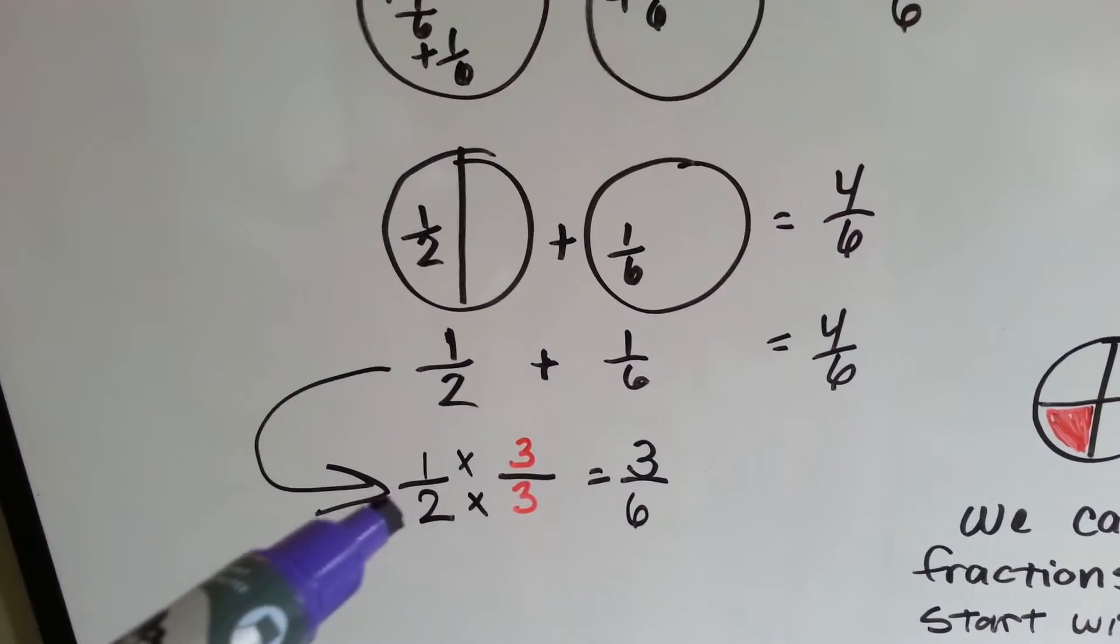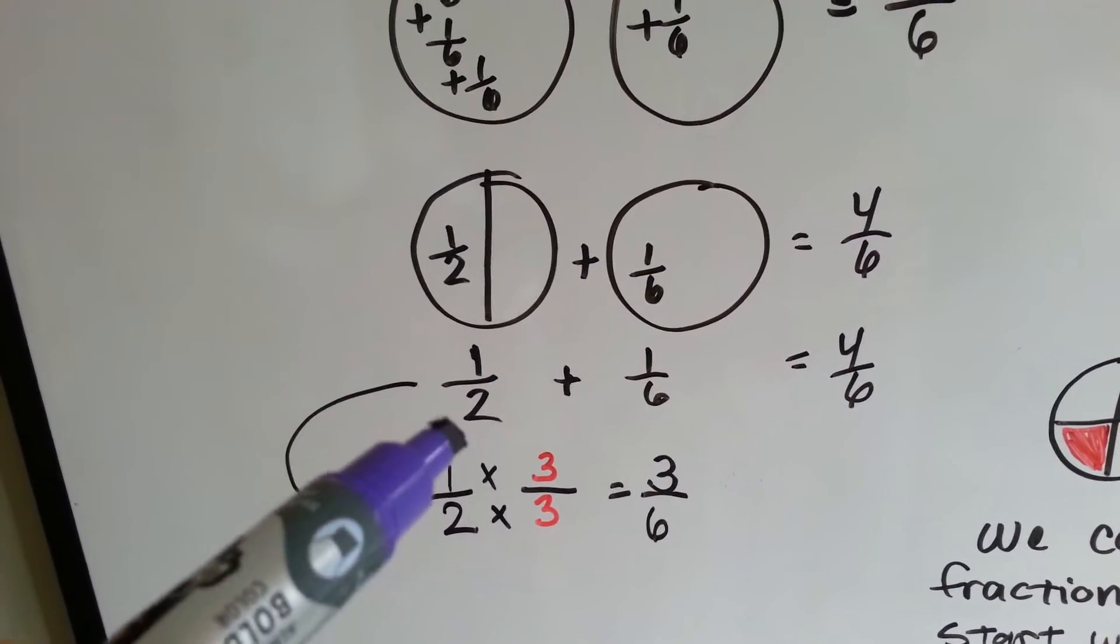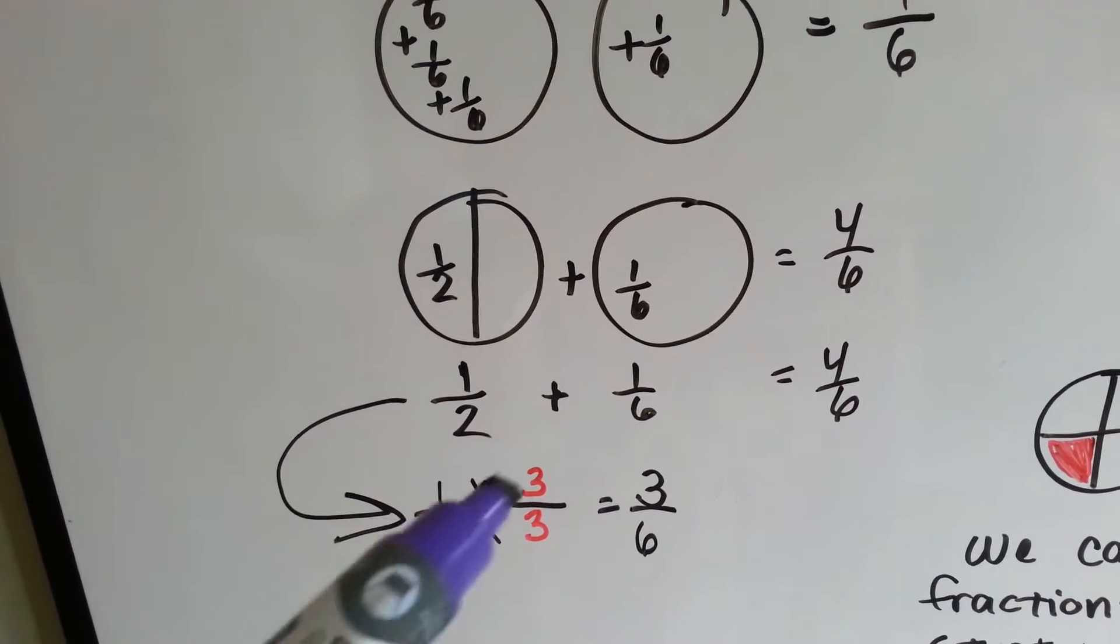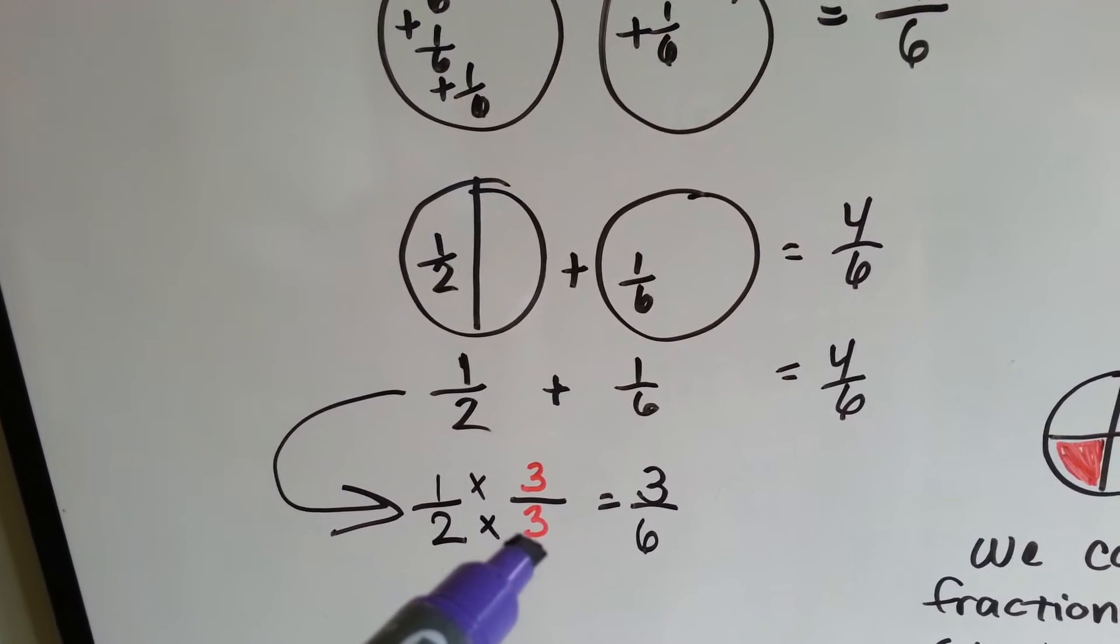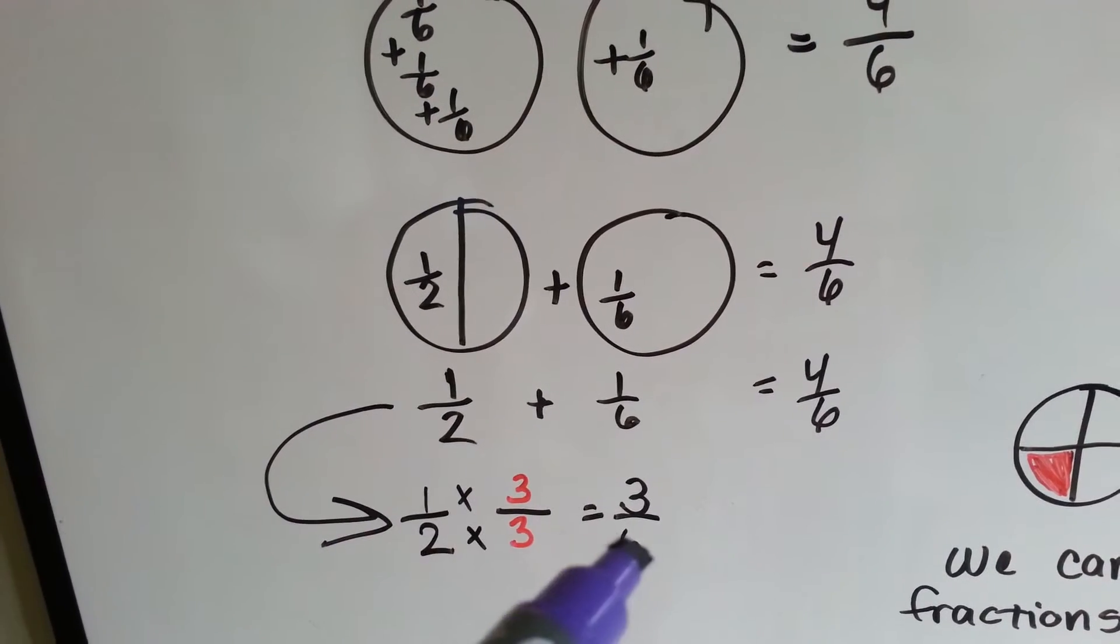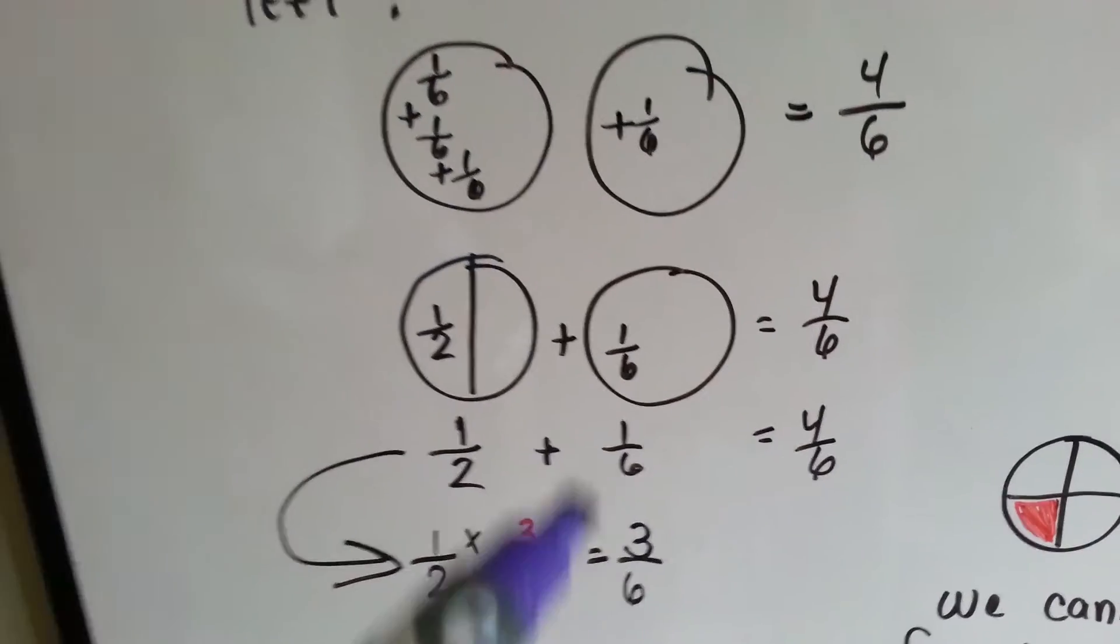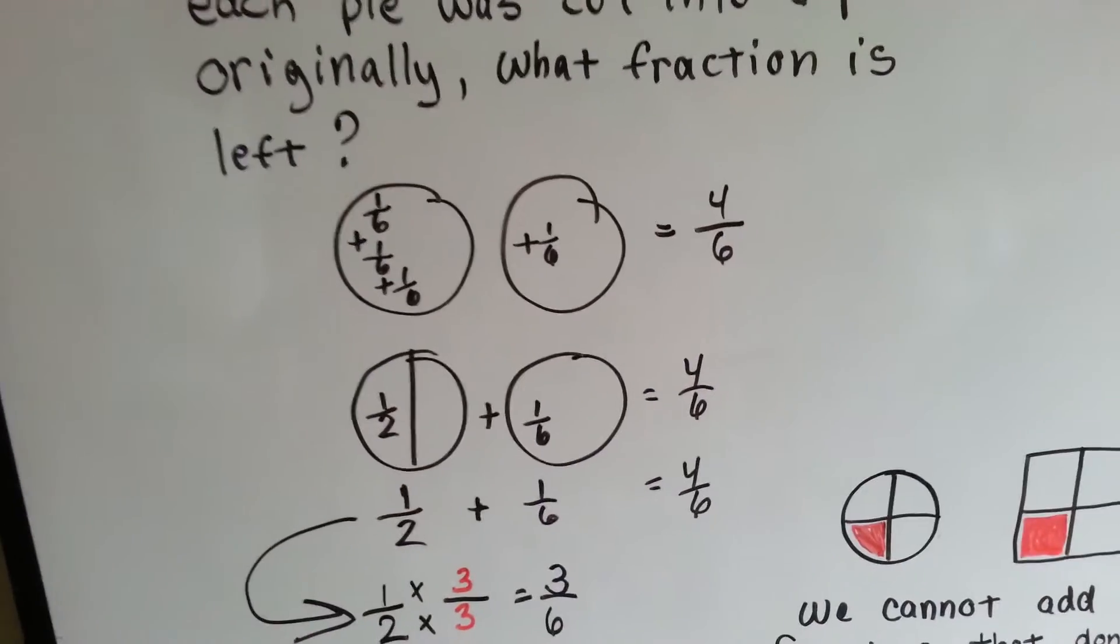We take the half, and we say, what does this 2 need to become a 6? It needs to be multiplied by 3. The 1 gets jealous. It wants to be multiplied by 3. So, 2 times 3 is 6, 1 times 3 is 3. So, then we add 3 sixths plus the 1 sixth, and we get 4 sixths.